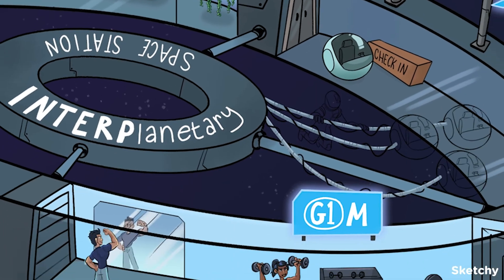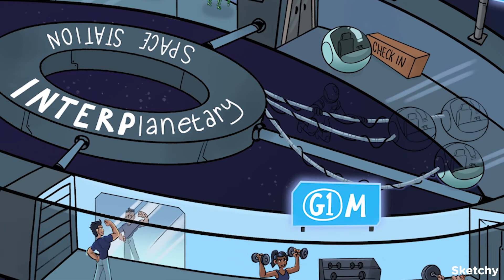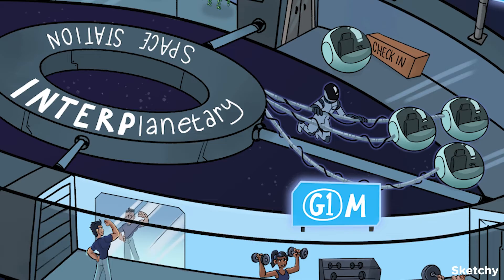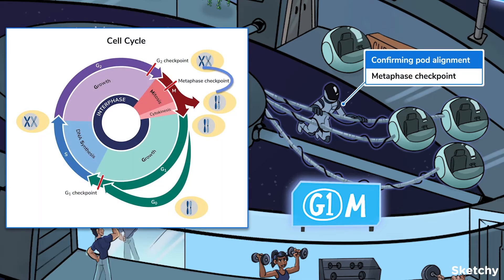Last but certainly not least is the metaphase checkpoint, also called the spindle checkpoint. This occurs at the end of metaphase. It makes sure that each chromosome is properly attached to the spindle and lined up at the metaphase plate. These space pods look ready to go.